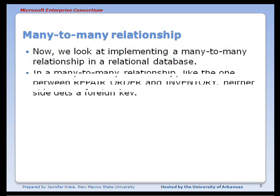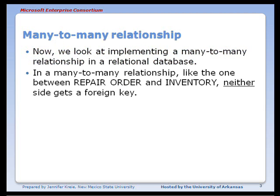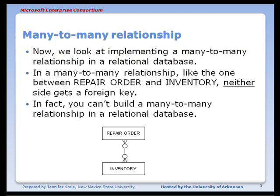In a many-to-many relationship, like the one we have between repair order and inventory, neither side gets the foreign key. In fact, you cannot build a many-to-many relationship in the database itself. You can have it in the model, but not in the database.